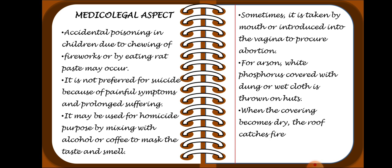Medical-legal aspects: Phosphorus poisoning is most commonly accidental, especially in children — due to chewing of firecrackers or by eating rat paste (rodenticides). It is not preferred for suicide because of the painful symptoms and prolonged suffering; it is not considered an ideal suicide poison.